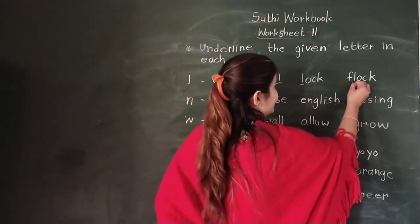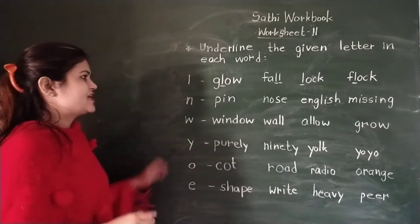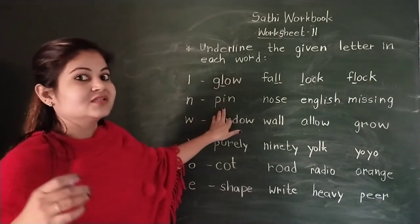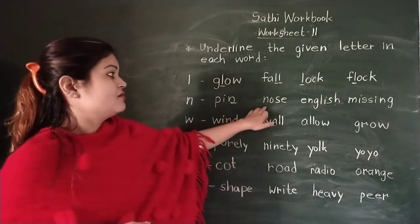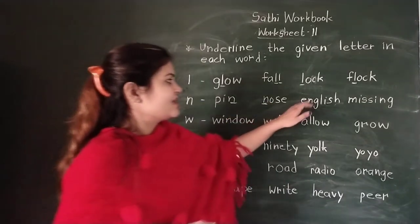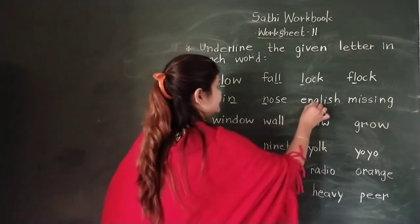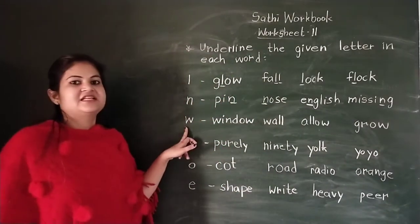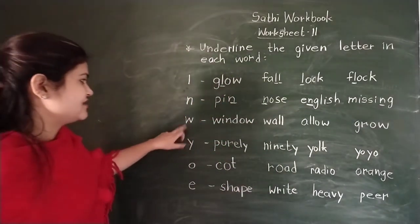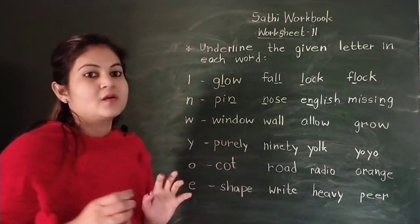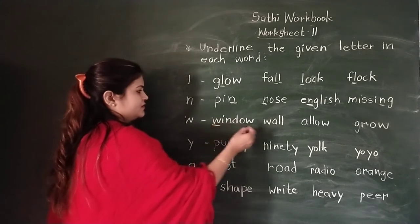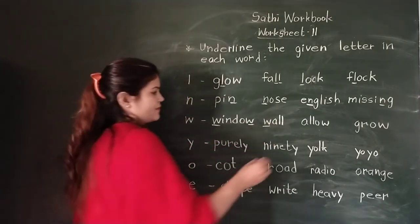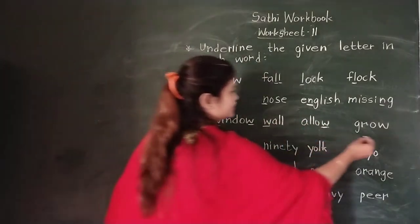Next letter is N. Then the next letter is W. Which letter is this? This is letter W. In 'window', there is W at the start. In 'wall', W is at the beginning. In 'allow', W appears. In 'grow', W is at the end.